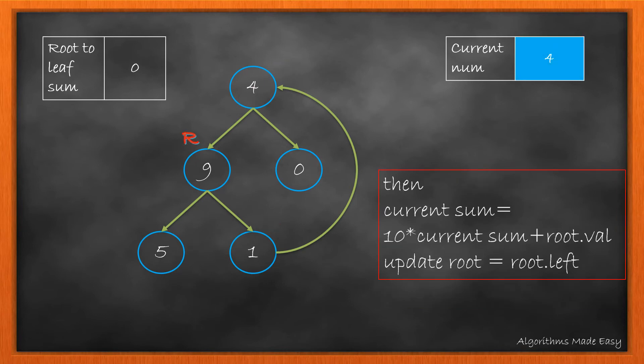We then update current number with 10 multiplied by current number and add root value, and then move root to its left. This completes the first iteration, and as root is still not null, we move ahead.